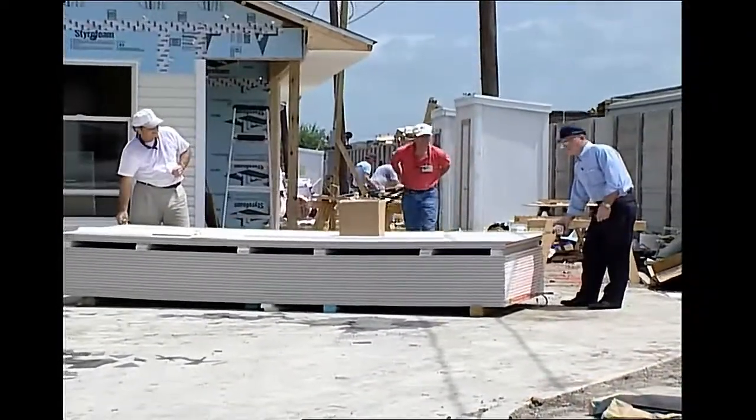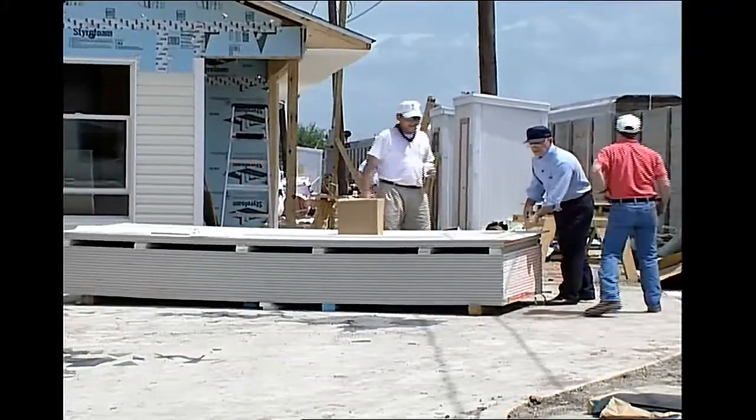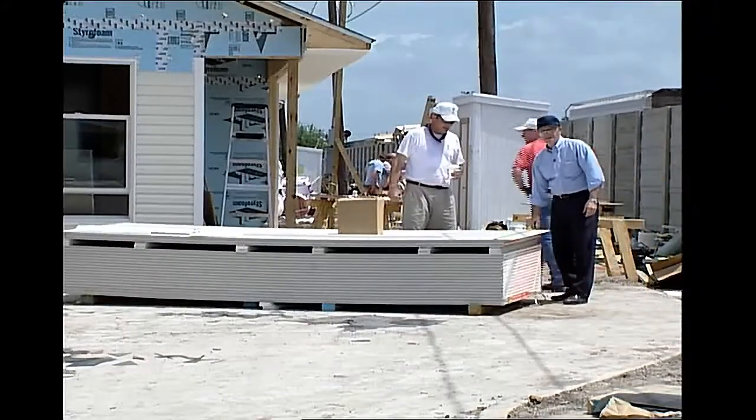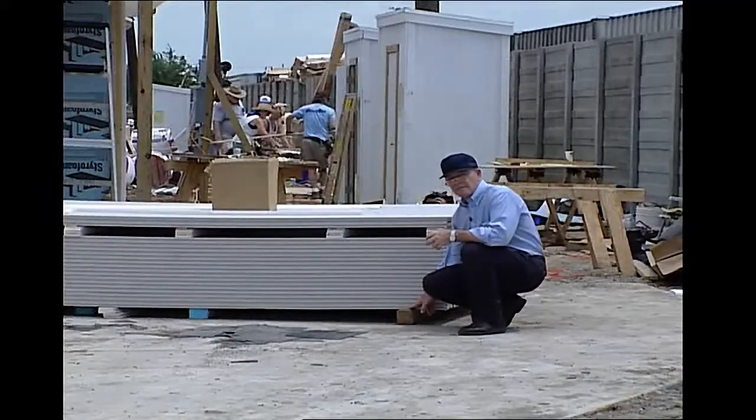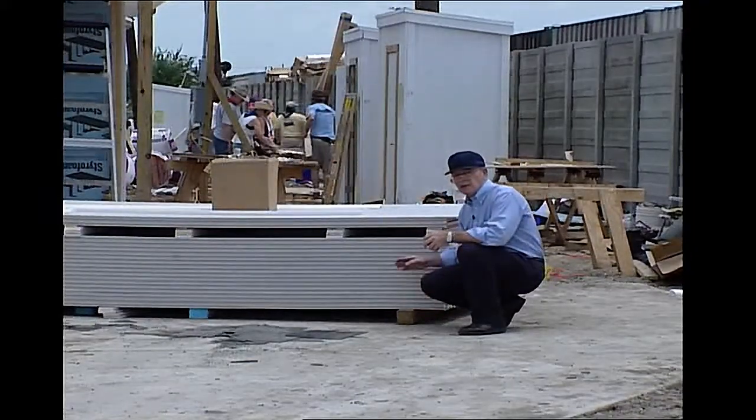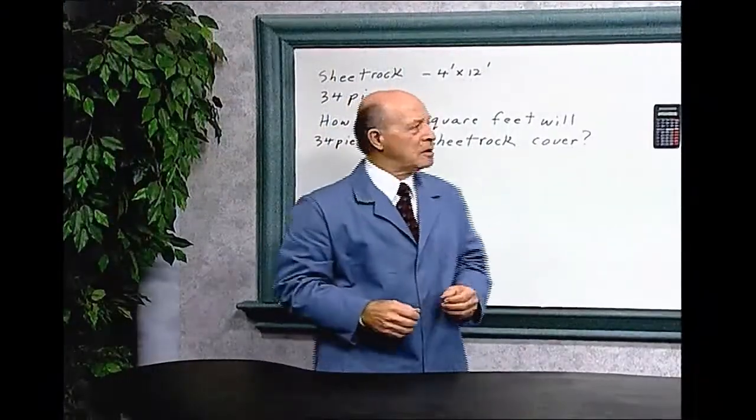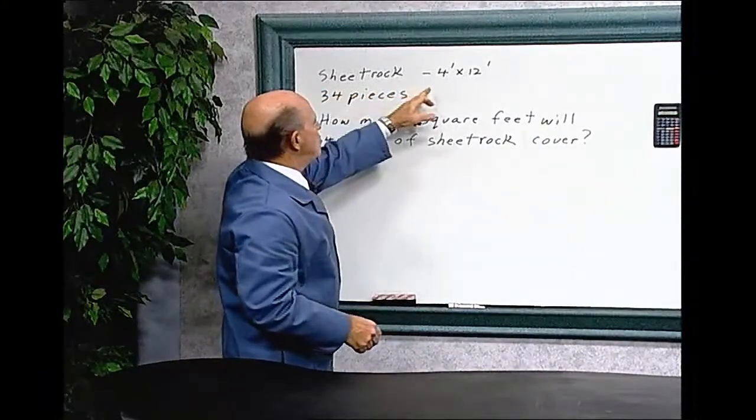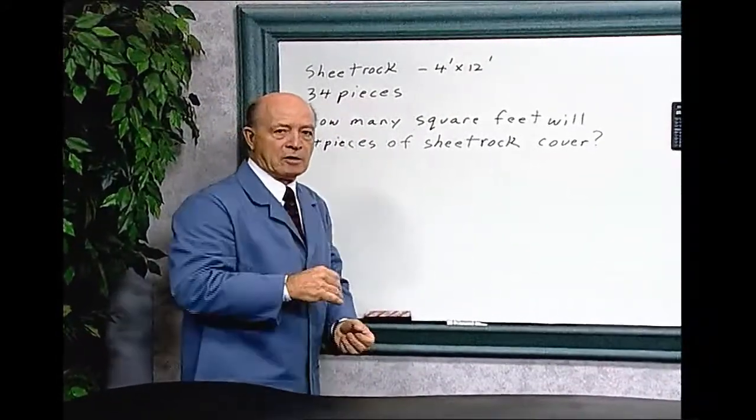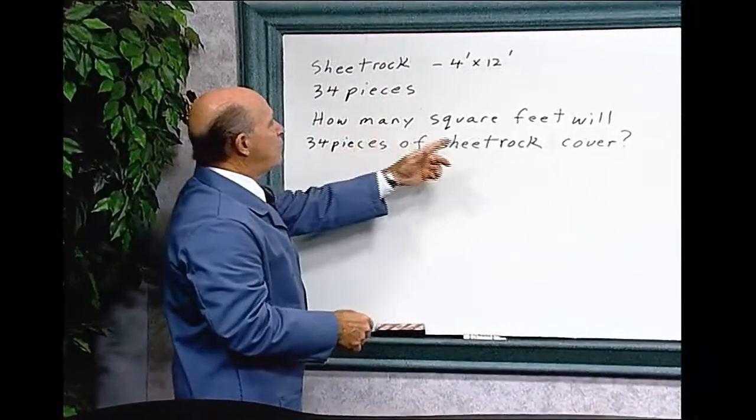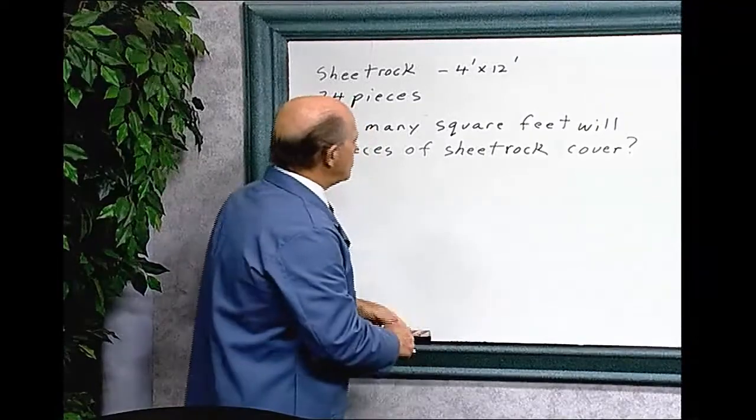This sheetrock measures 12 feet by 4 feet. There are 34 pieces of sheetrock in this stack. How many square feet of sheetrock are in this total stack? Let's do the math. The sheetrock measures 4 feet by 12. There's 34 pieces in that bundle. How many square feet will 34 pieces of sheetrock cover? We've got to use the area formula.